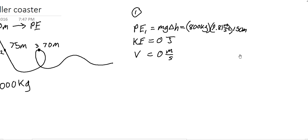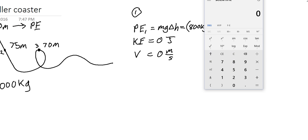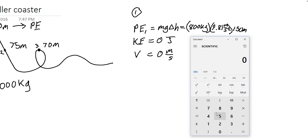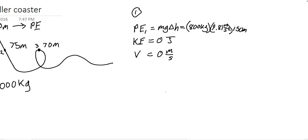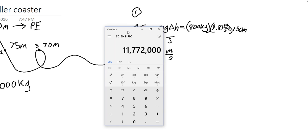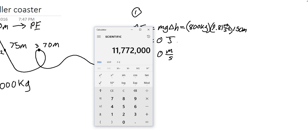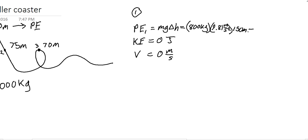Plugging that into the calculator: 8,000 times 9.81 times 150 gives me 11,772,000. So the potential energy at position 1 is equal to 11,772,000 J. Since this is our initial energy, it's not only the potential energy at 1, it's also the total energy we will have available for the ride, and this will become important later on.